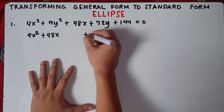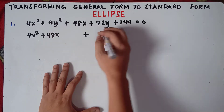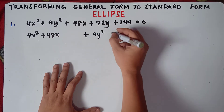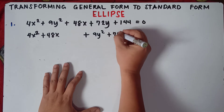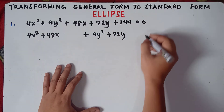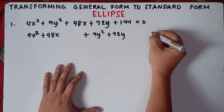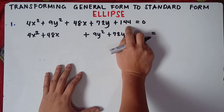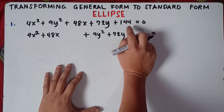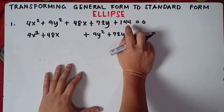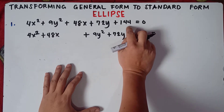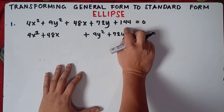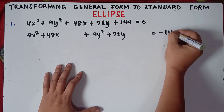Then copy the y variables: positive 9y squared, and then we have positive 72y. Then equals — you transpose this constant, 144, from left to right. Once you transpose an equation, you always change the sign. This is positive, so it will be negative 144.